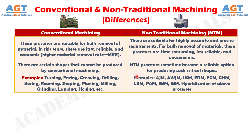And Difference No. 10: Examples of conventional machining processes include turning, facing, grooving, drilling, boring, reaming, shaping, planing, milling, grinding, lapping, honing, etc. Whereas examples of non-traditional machining processes include abrasive jet machining, abrasive water jet machining, ultrasonic machining, electrical discharge machining, electrochemical machining, chemical machining, laser beam machining, plasma arc machining, electron beam machining, etc., and hybridization of all these processes.